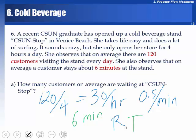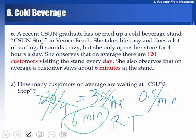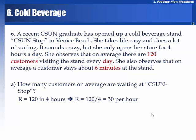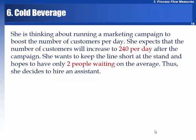Flow time is six minutes. We know that inventory equals flow time multiplied by throughput, so they must be in the same time unit. As long as we use six minutes, we cannot use 120 per day or 30 per hour unless we convert. The easier way is to multiply throughput per minute — 0.5 per minute — by six minutes, giving three customers on average waiting.